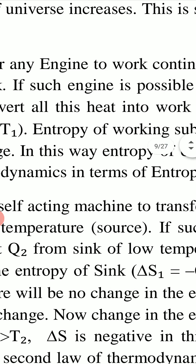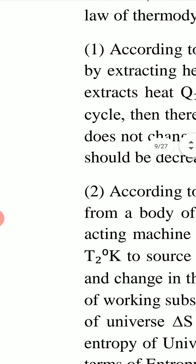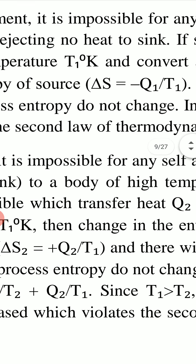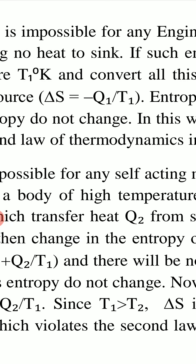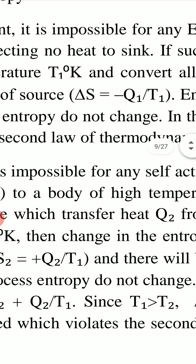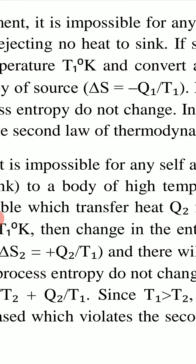According to the Kelvin–Planck statement, it is impossible for any engine to work continuously by extracting heat from a source and rejecting no heat to a sink — a perfect heat engine is not possible. If we assume the Kelvin–Planck statement is wrong, then a 100% efficient heat engine becomes possible.